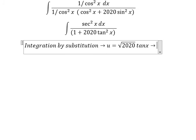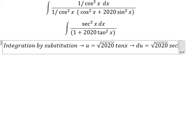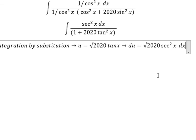Then we get du equals to the square root of 2020 sec squared x dx. Because we don't have the square root 2020 on top, we divide with this number.